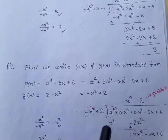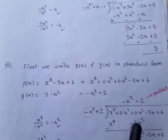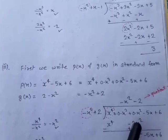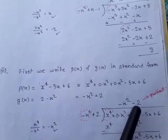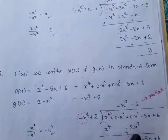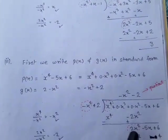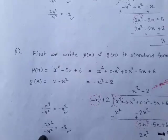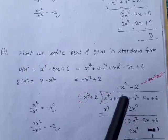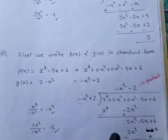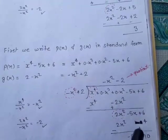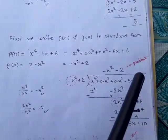After reversing signs and cancelling x⁴, we get 2x² − 5x + 6. Now 2x² ÷ −x² = −2, so the second quotient term is −2. Multiply −2 by (−x² + 2) to get 2x² − 4. Reversing signs and cancelling, we are left with −5x + 6 + 4 = −5x + 10. So the remainder is −5x + 10 and the quotient is −x² − 2.